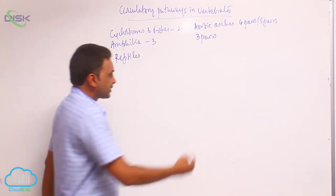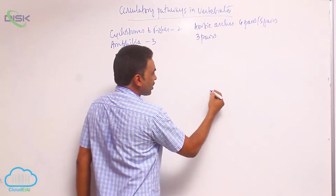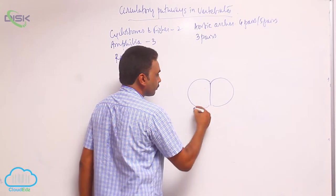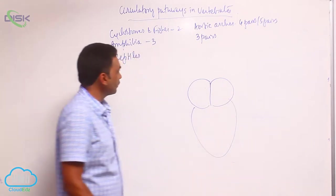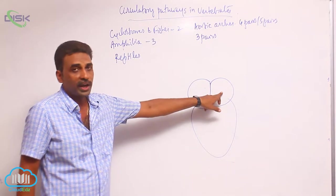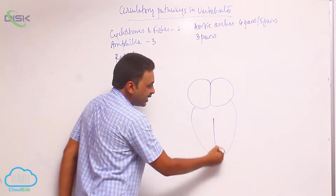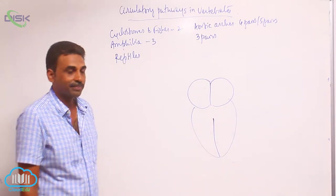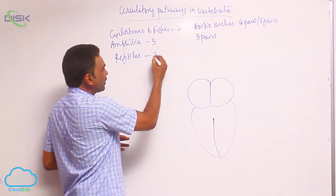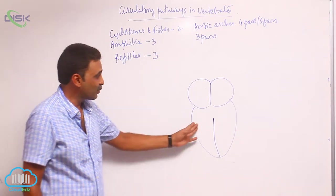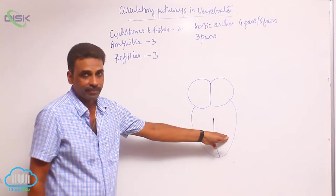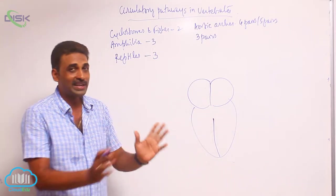In reptiles, if you see the structure of the heart, as usual there are two atria, and the ventricle is incompletely divided. So, we still use the term three-chambered heart, because the ventricle is still a single chamber and has not been completely separated.